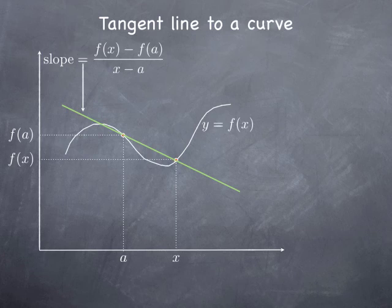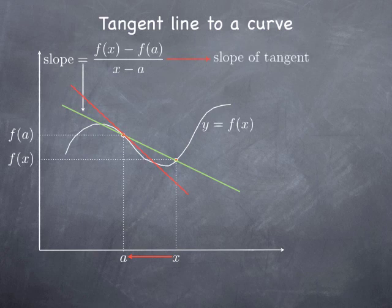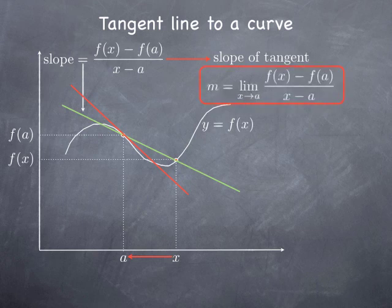This secant line, of course, is not the tangent line to the graph at (a, f(a)). But if we let x approach a, then the corresponding secant line, as x is approaching a, is getting closer and closer to the tangent line. And therefore, that's how we define the slope of the tangent line — as the limit, as x is approaching a, of this difference quotient, f(x) minus f(a) over x minus a.